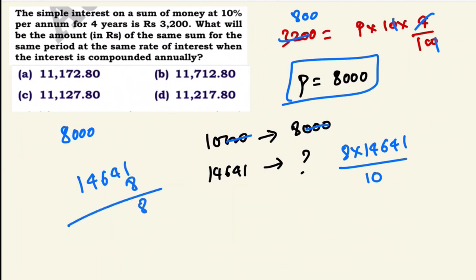Calculating: 8 × 14,641 = 117,128. Dividing by 10 gives Rs.11,712.80. That is the total amount after 4 years when compounded annually.